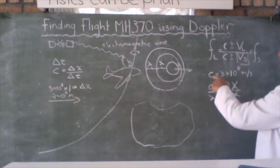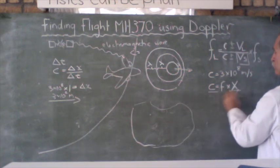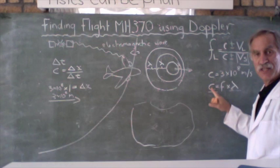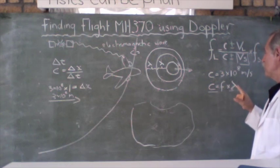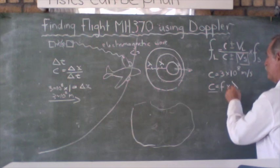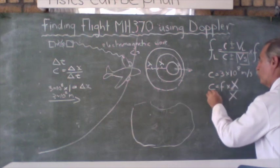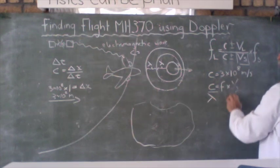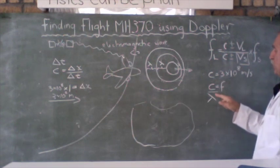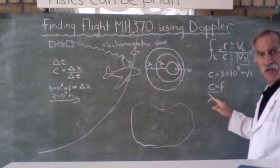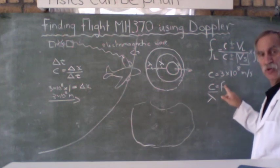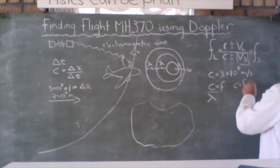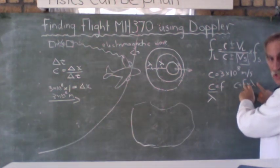But look at this formula here. You need to know this. C is equal to frequency times wavelength. Now, C is a constant, equals frequency times wavelength. If we divide both sides by wavelength, we're left with a formula that frequency and wavelength are inversely related. The bigger this one, the smaller that one. The bigger that one, the smaller that one.